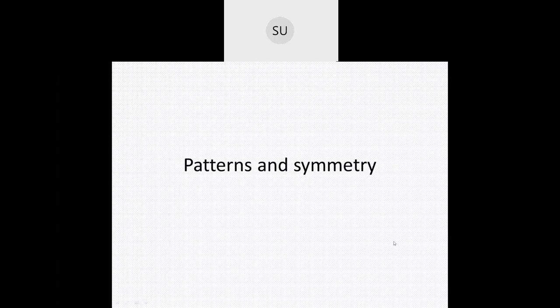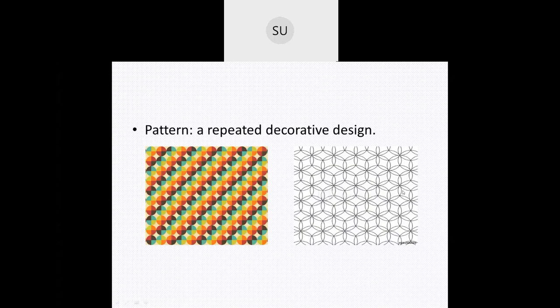So what is the meaning of patterns and symmetry? Patterns are something that are repeated to create a design. When a shape is repeated in a particular way or in a particular order to create a design, that is called a pattern. You can have patterns in designs, textures and clothes. You can find patterns around you in nature, and you can find patterns in numbers also. So patterns is basically a repeated decorative design.